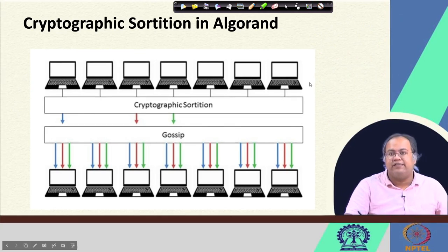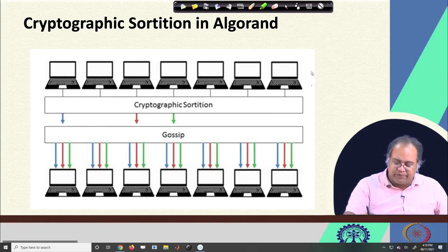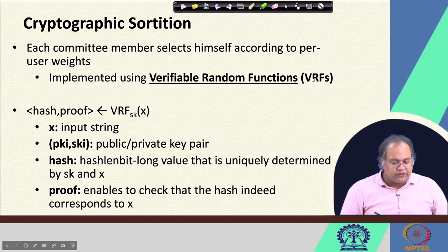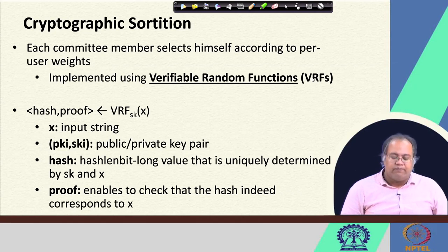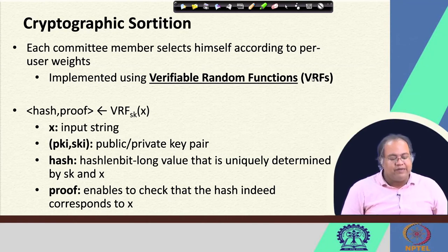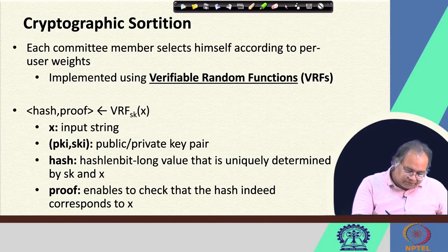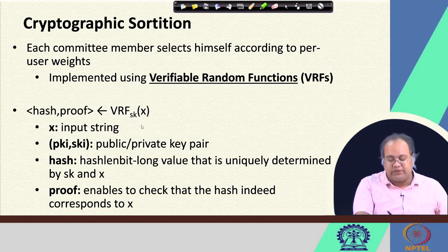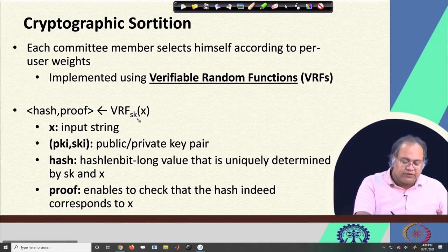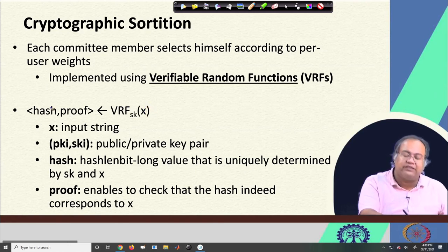Let us look at what the cryptographic sortition algorithm actually does. Each committee member selects themselves according to per-user weights — this weight comes from the amount of money that individual users have — and this is implemented using something called a Verifiable Random Function, or VRF. VRF takes the private key of user i as input along with a certain input message x, and it generates a hash and a corresponding proof. The proof validates that the hash being claimed is correct.